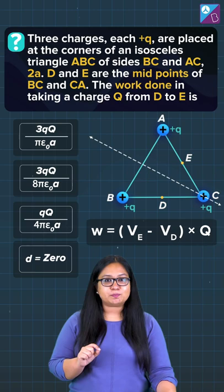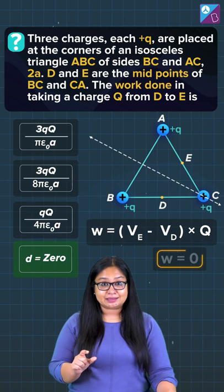And so the work done in taking a charge Q from D to E becomes zero as well. So the answer to this question is zero.